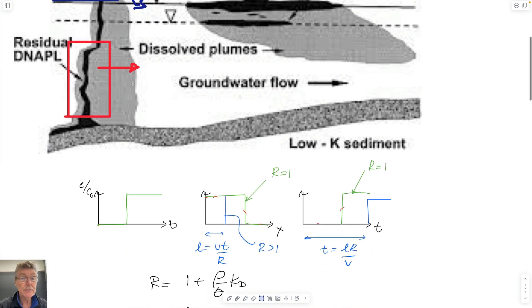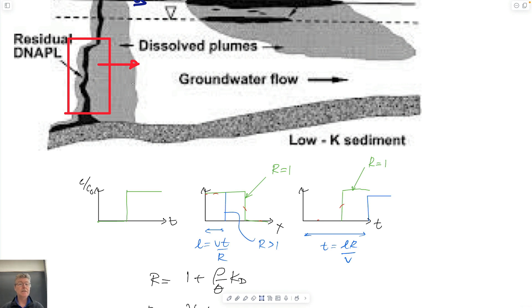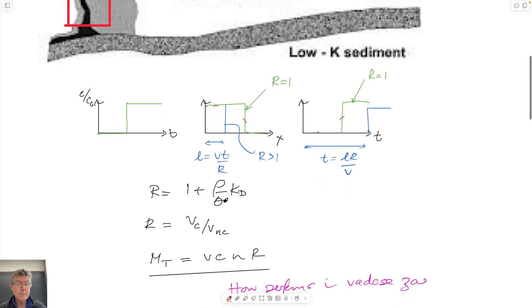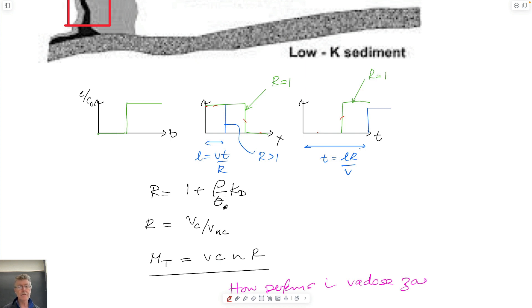So far we've been talking about the groundwater zone and dissolution and transport in the groundwater zone. This is the source, the plume goes down from this. We know that these materials, if they're non-conservative or even if they're conservative, can be defined by a retardation coefficient which is one if it's conservative, and greater than one if it's non-conservative.